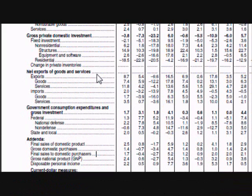The third main category is net exports of goods and services. When calculating the GDP, the value of exports is added to the GDP total while the value of imports is subtracted from it. The US imports more than it exports, meaning it has a negative net export level. Therefore, the difference between the value of goods and services imported and the value exported is subtracted from the GDP total. This means the level of supply produced by companies does not meet the level of demand from consumers.